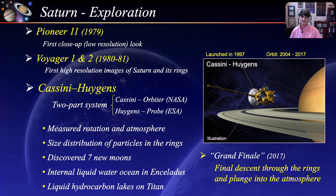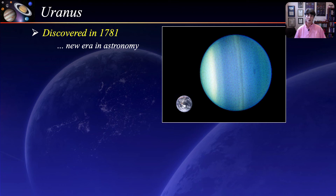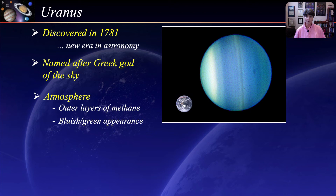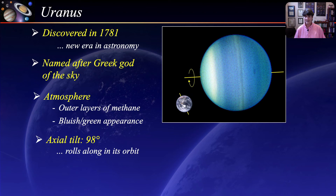The discovery of Uranus in 1781 by William Herschel marks a new era in astronomy — it was the first planet to be discovered with a telescope. Uranus is the third largest planet with a diameter of about four times that of Earth, named after the Greek god of the sky. Uranus is covered in methane clouds that absorb red light and reflect blue, giving it its bluish-green appearance. Its most unusual characteristic is that its axis of rotation is tilted 98 degrees with respect to its orbital plane, so it sort of rolls along its orbital plane — it is known as the sideways planet.